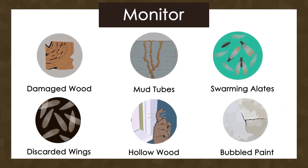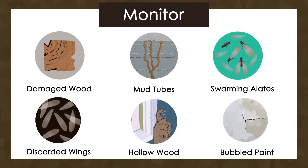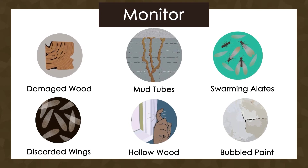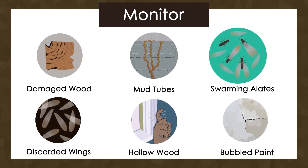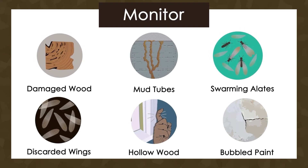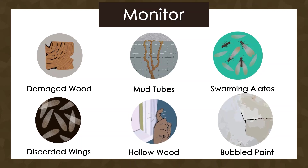When looking for signs of subterranean termites, look for damaged wood, mud tubes, swarming alates, discarded wings, hollow wood, and bubbled paint.